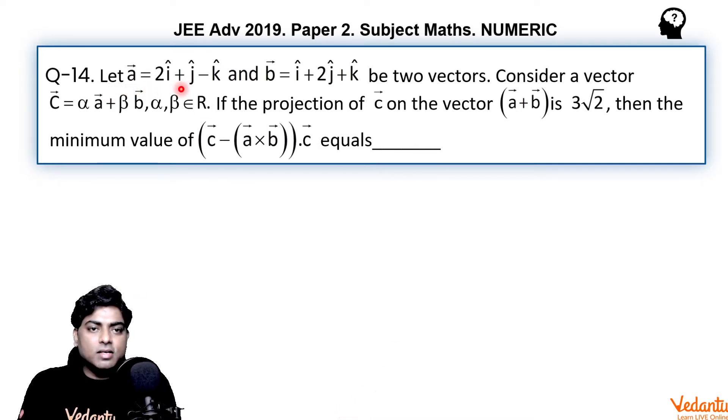Let a = 2i cap + j cap - k cap and b = i cap + 2j cap + k cap be two vectors. Consider another vector c = alpha a + beta b, where alpha, beta belongs to real numbers. If the projection of c on the vector (a + b) is 3 root 2, then the minimum value of (c - (a × b))·c equals...